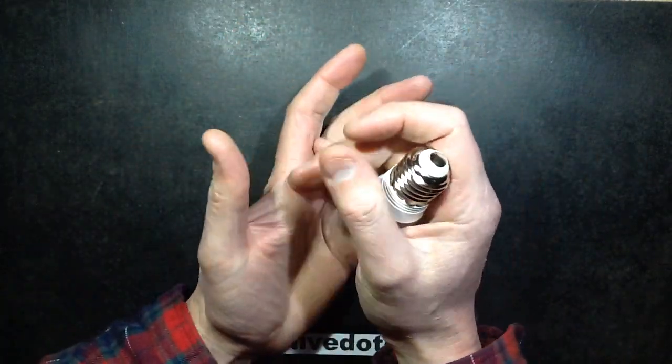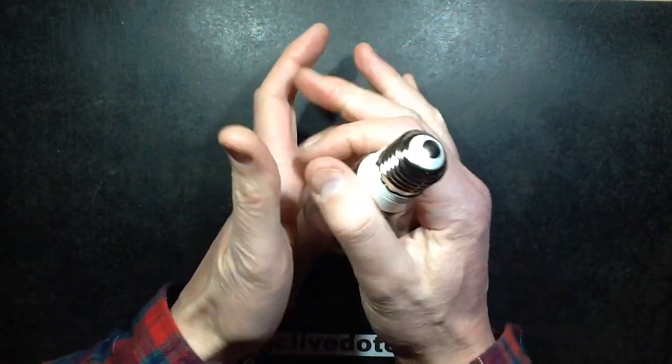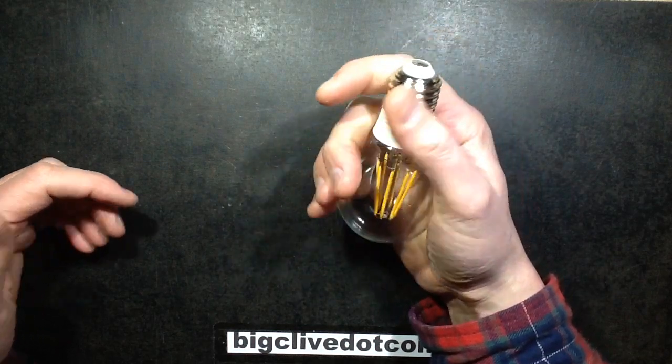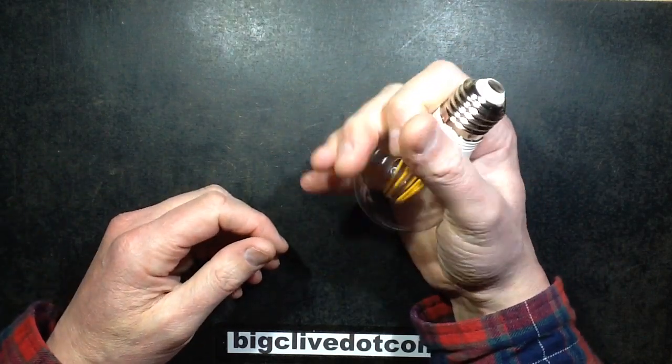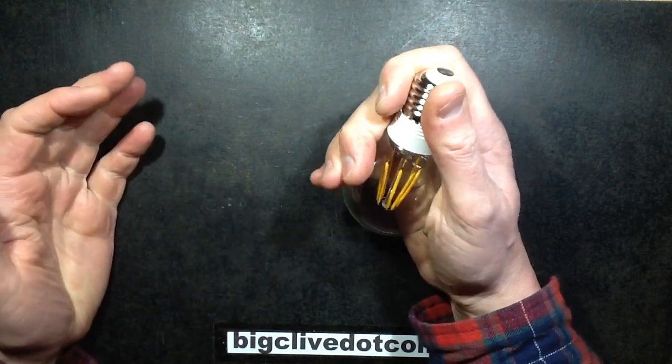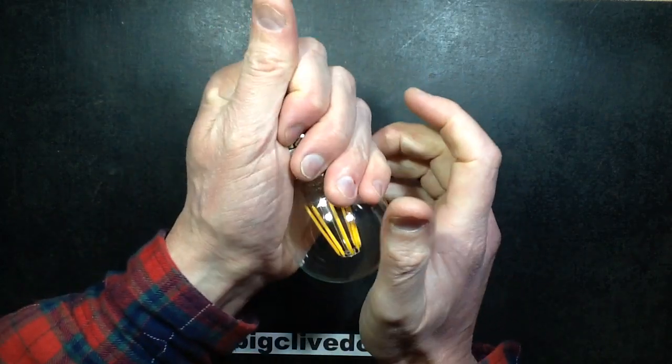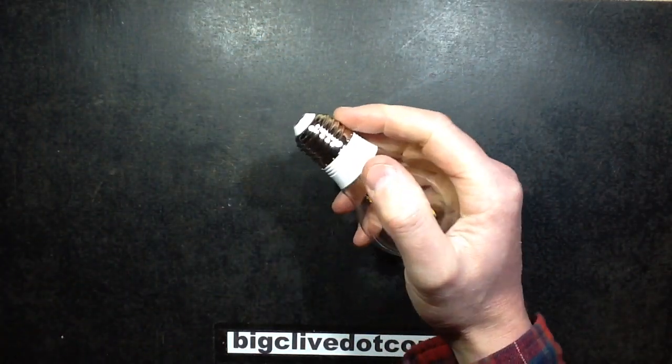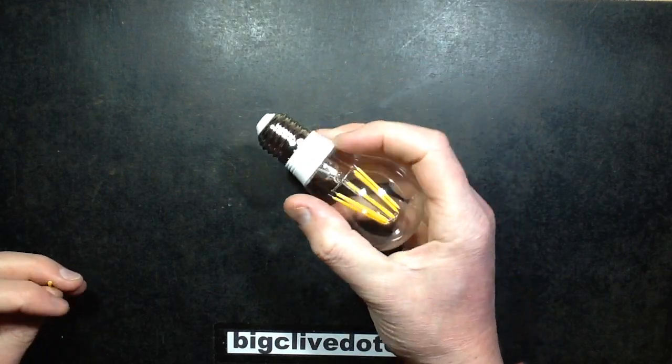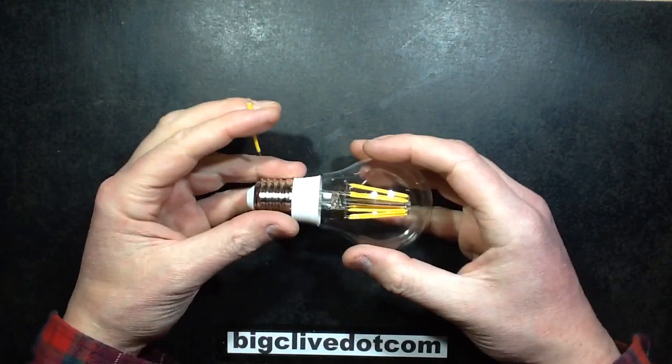Bizarrely for an 8 watt lamp, you go up thinking it's going to be hot. You feel it after it's been on for hours, all evening, and it just feels warm. Where is that heat going? I even took it out and felt the cap and it wasn't really hot. It must just be the large area that the heat's being dissipated across.